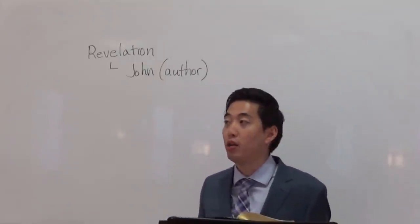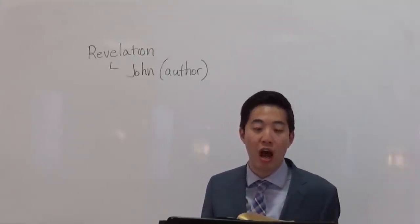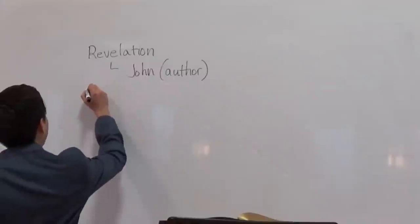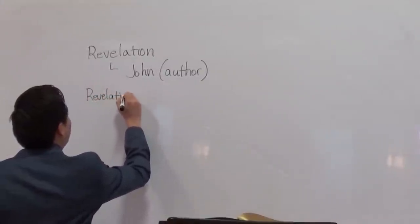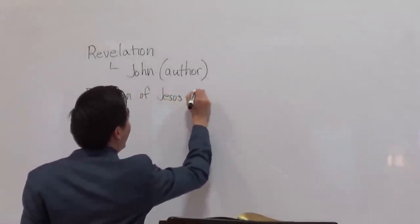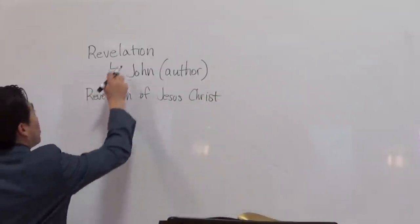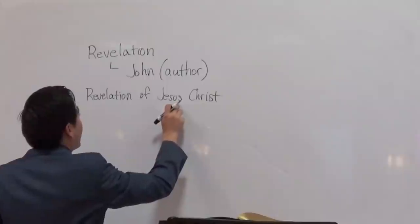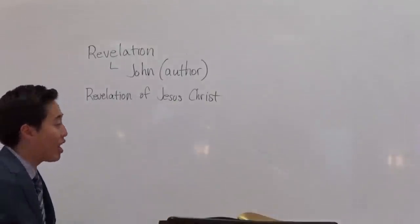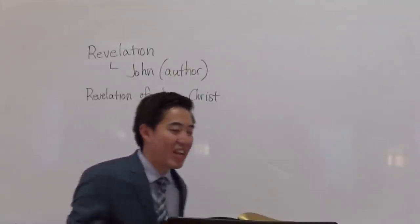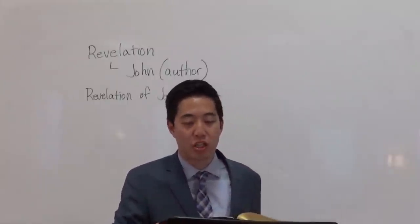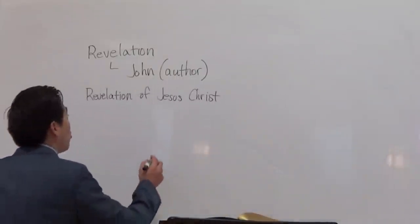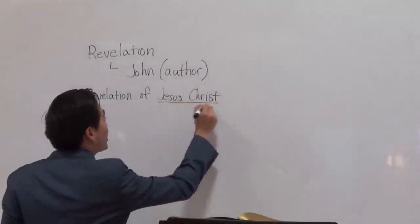Look at Revelation chapter 1, verse 1. Notice it says right here 'the revelation of Jesus Christ.' So since it says the revelation of Jesus Christ, that Jesus Christ should be the one whose name is after the book of Revelation. But the problem with this teaching is that you've got to realize that this is his revelation that he's giving to John — we recognize that. But we don't have to act overtly pious and say there's an error in the name of the book.